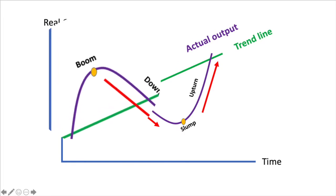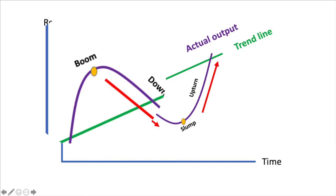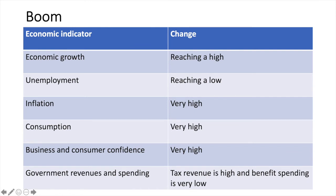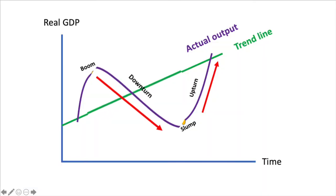Next up is a boom. After a period of improving economic activity, the economy might hit a boom, which is also often called a peak. Economic growth will be reaching a high as resources are used beyond efficient use. Workers will be putting in extra time and capital equipment will be pushed to its maximum use. With high levels of output comes very low unemployment. With so much earnings generated, consumers and businesses will be spending a lot, putting upward pressure on prices and resulting in inflation. In general, business and consumer confidence will be high. Due to high earnings, the government will be collecting significant tax revenues while also spending much less on welfare benefits. And after a peak, there is only one way to go: down.